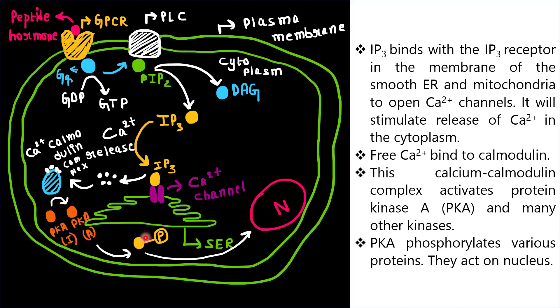The calcium-calmodulin complex activates protein kinase A, or PKA, and many other kinases. PKA phosphorylates various proteins. These phosphorylated proteins enter the nucleus and help in the transcription of specific genes, and those gene products help in cellular function.